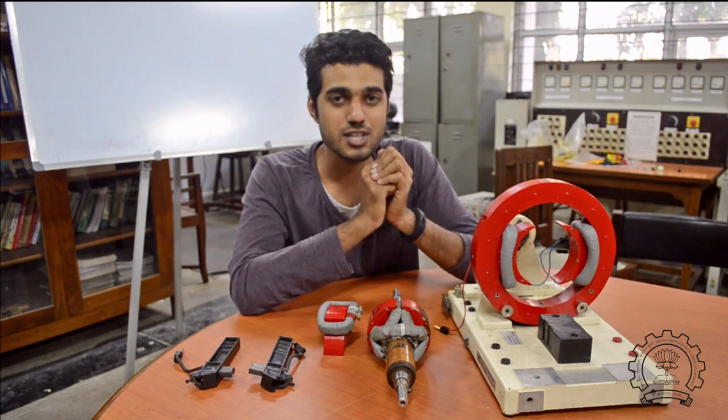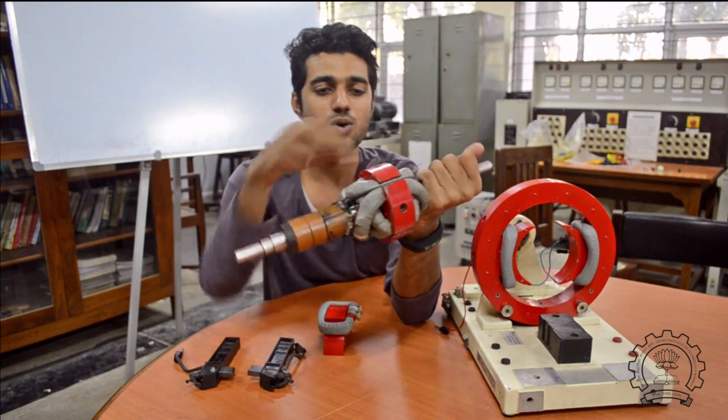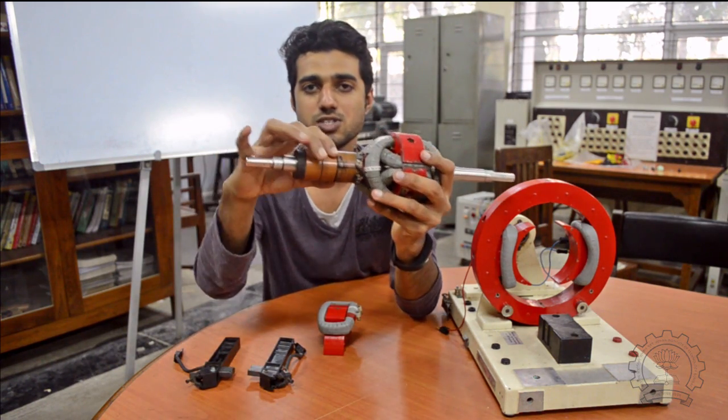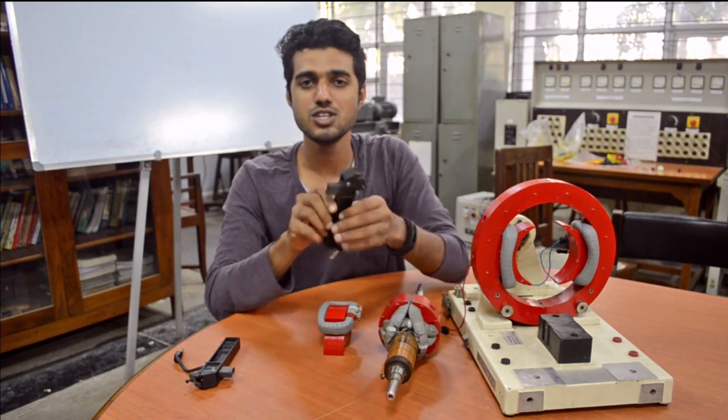So the next thing is the armature. This is the armature. You can see the coils which are inserted here and which are connected to the commutator segments. And the current here will be collected using these two brushes.